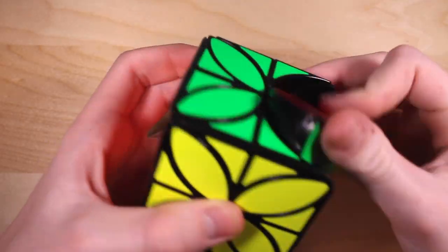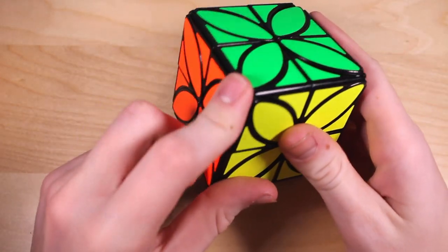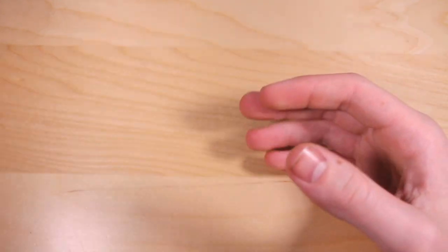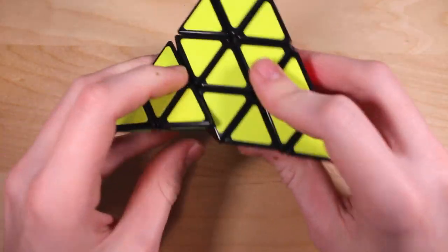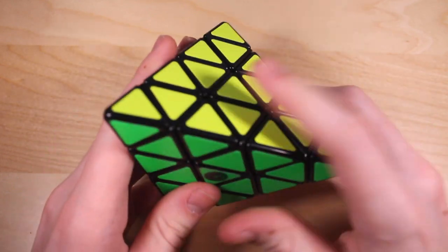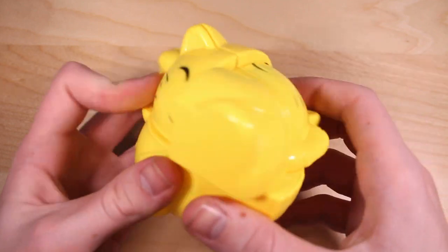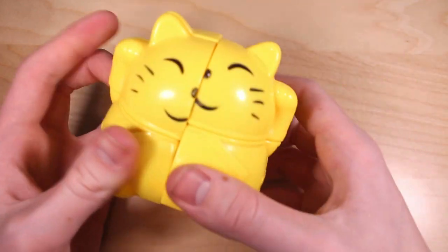Qi Yi Clover Cube Plus. Basically, a Curvy Copter minus the corners plus the 2x2 moves. Doesn't add too much of a challenge. Shengxiao Master Pyraminx. Turns really well. A lot of fun to solve. Highly recommended. YJ Cat 2x2. Nothing too special about it. Just a Cat 2x2.